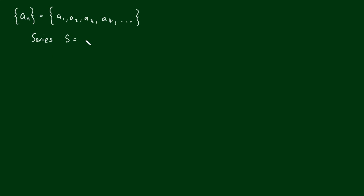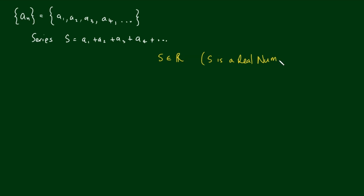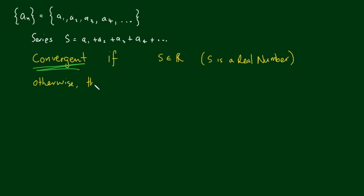S equals a1 plus a2 plus a3 plus a4 plus so on and so forth. So if the addition of all of these terms equals a real finite number — if S is a real number — then we say the series is convergent. And if we add up all of these numbers and we can't get a finite number, or we can't evaluate what that result is going to be, we call the series divergent.